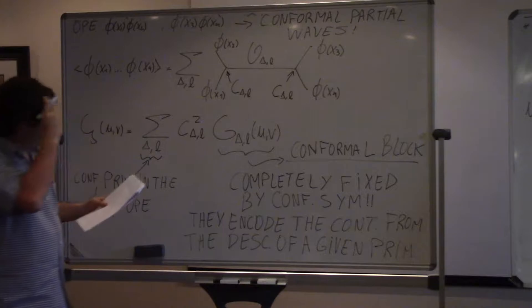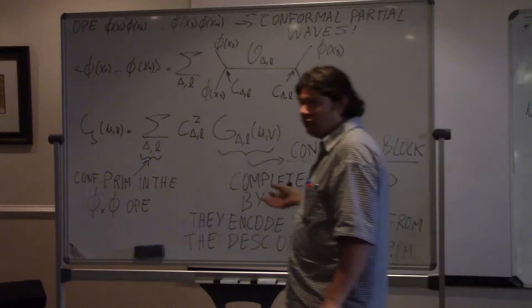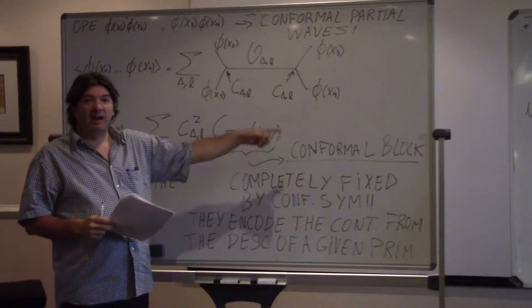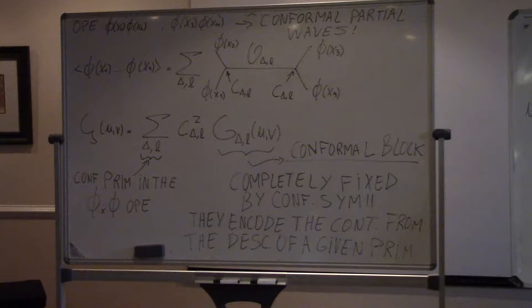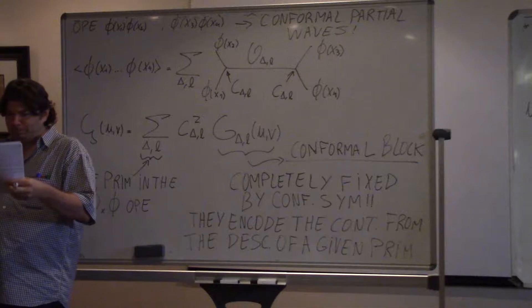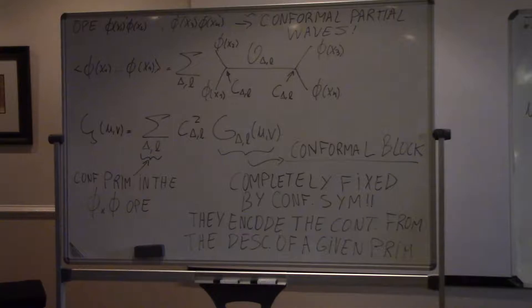Someone asked whether the OPE expansion is known in closed form — the equivalent question is whether the conformal blocks are known in closed form. For external scalar operators, they are known in even number of dimensions. In all dimensions they are extremely complicated and we don't know a closed form expression — we know only series expansions. In general, they depend on u, v, on delta and L of the intermediate operator, and on the number of dimensions.